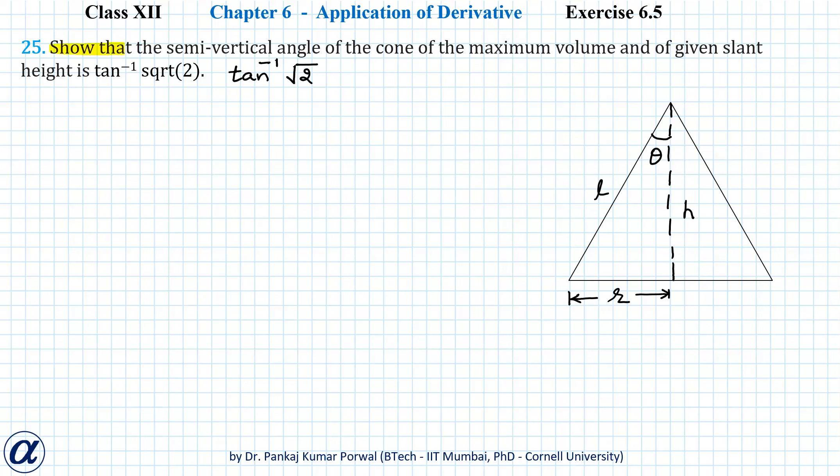In this question, we have to show that the semi-vertical angle of the cone of maximum volume with given slant height is tan inverse square root 2.